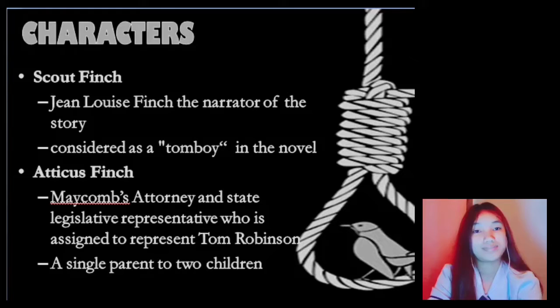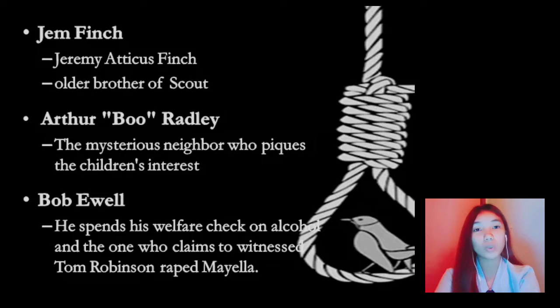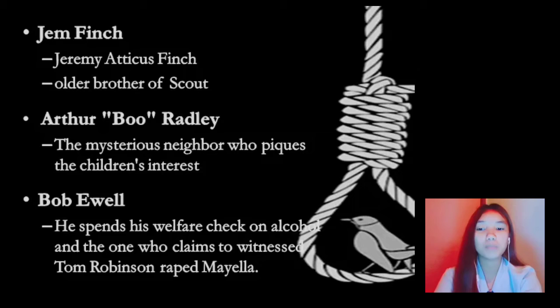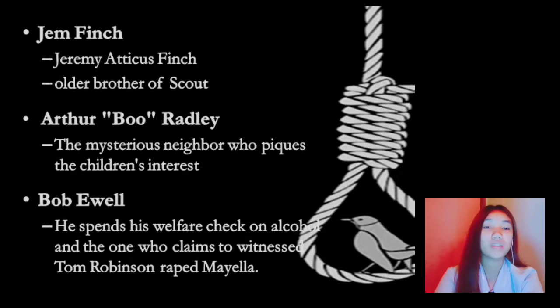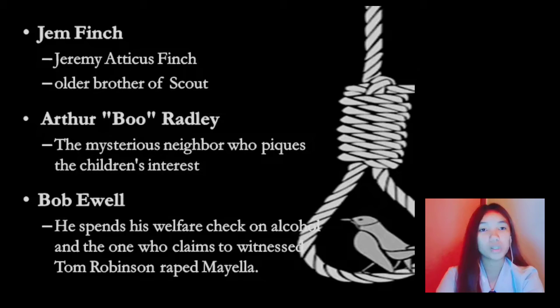The next character is Jeremy Atticus Finch, known as Jem Finch. Jem is the older brother of Scout Finch, characterized as a typical American boy, refusing to back down from dares and fantasizing about playing football. He is four years older than Scout. He gradually separates himself from her games, but remains her close companion and protector throughout the novel. Jem moves into adolescence during the story, and his ideals are shaken badly by the evil and injustice he perceives during the trial of Tom Robinson.